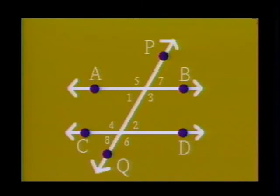Corresponding angles are angles on the same side of the transversal and which are either both above or below the two lines. Angles 5 and 4, angles 1 and 8, angles 7 and 2, and angles 3 and 6 are the four pairs of corresponding angles in our drawing.